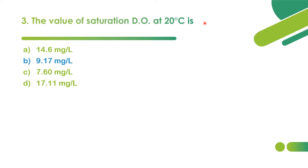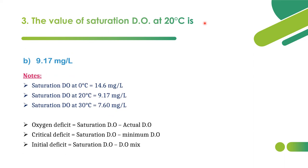The answer is option B: 9.17 mg/L. This is the standard value for saturation DO at 20°C. At 0°C it is 14.6 mg/L, at 20°C it is 9.17 mg/L, and at 30°C it is 7.60 mg/L. As temperature increases, saturation DO decreases — so a cold river has higher saturation DO and better purification capacity than a warm river.